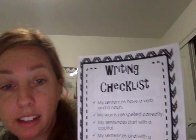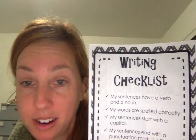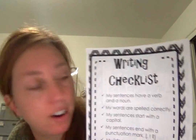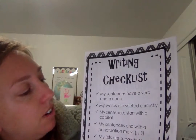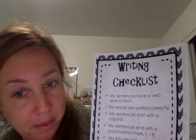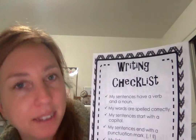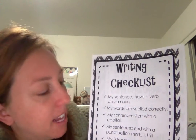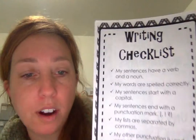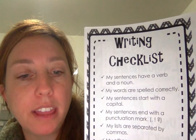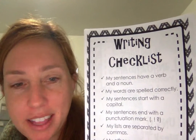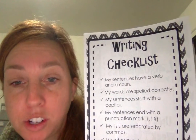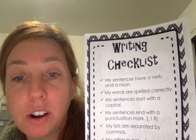My words are spelled correctly — very important. If you want your readers to know what you're talking about, we have to spell words correctly. Your sentences start with a capital; it's easy to forget, but make sure there's a capital after every period to start your sentence. Also, your sentences end with a punctuation mark. They can't just be floating out there — they have to have a period, an exclamation mark, or a question mark, to let readers know how to read your sentence.